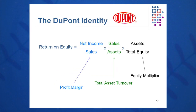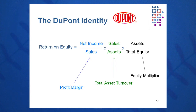How did they do that? They took net income divided by equity and multiplied by sales over sales and then assets over assets. In effect, they've been multiplying by one. And they were able to break this ROE — net income over equity — into three different pieces, just by moving the numerators and denominators around.